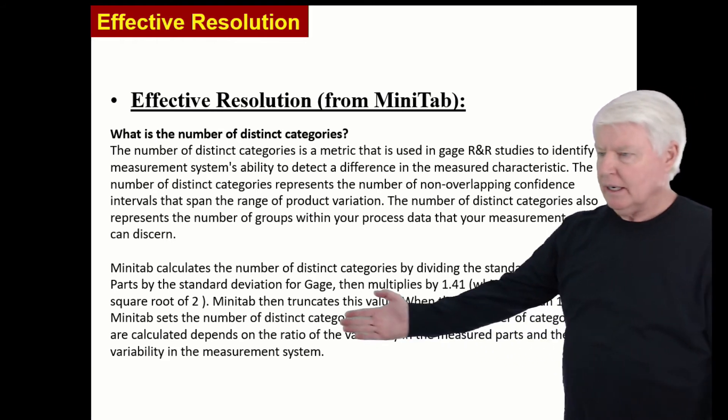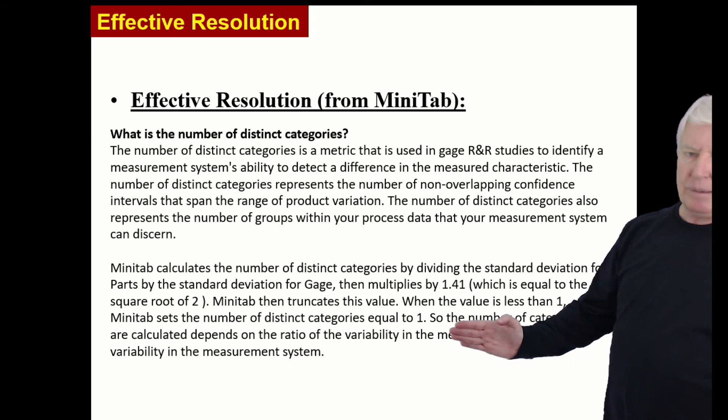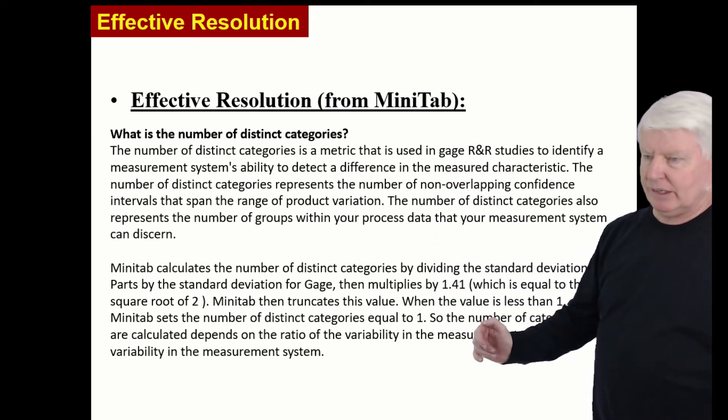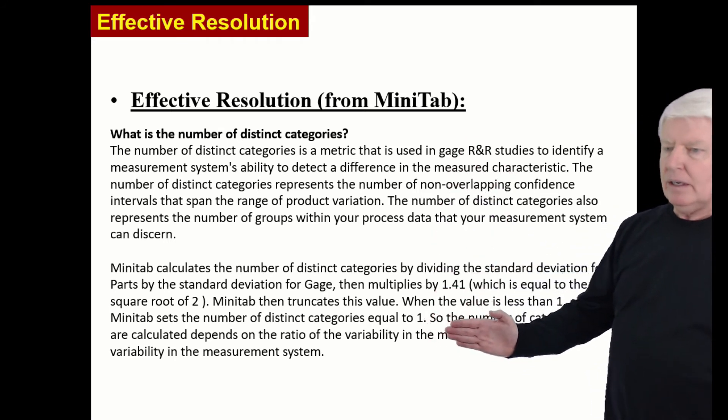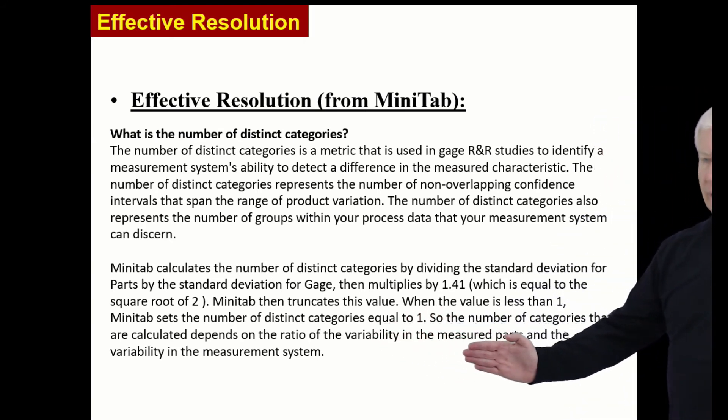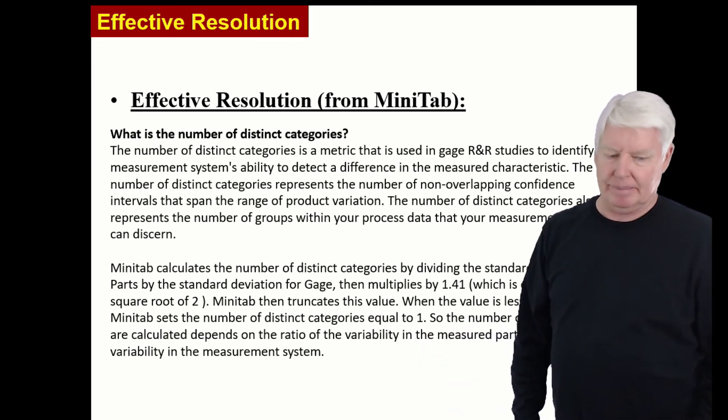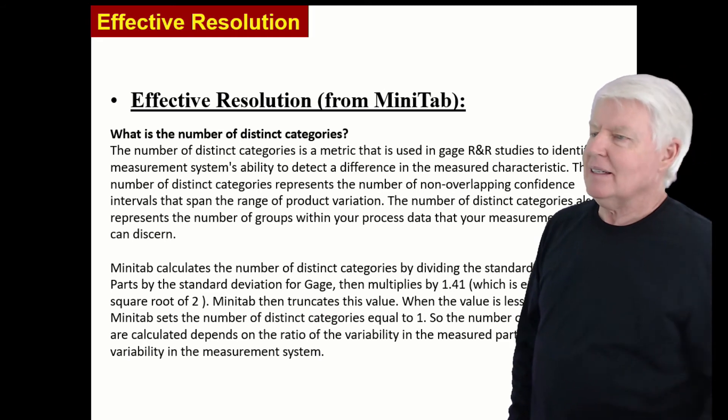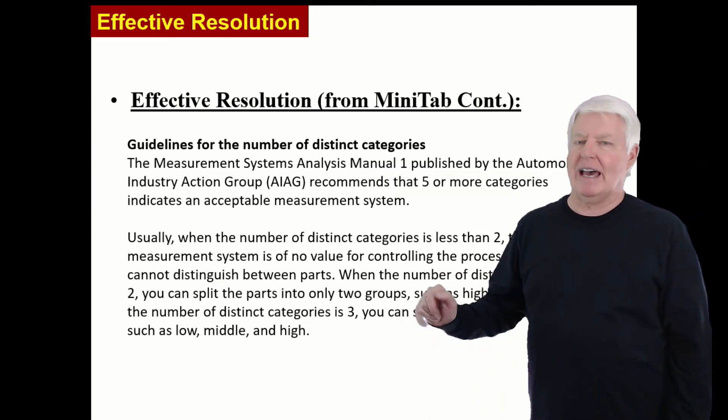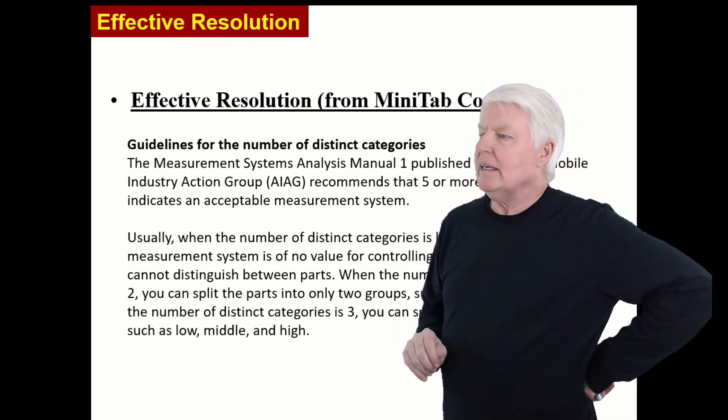Minitab then truncates this value. When the value is less than 1, Minitab sets the number of distinct categories equal to 1. So that'd be one what? One column on your histogram, as I mentioned earlier. So the number of categories that are calculated depends on the ratio of the variability in the measured part, sigma of the parts, and the variability in the measurement system. So there you go. And you may need to listen to that a couple times. I know I've had to do that in many of these vocabulary studies.